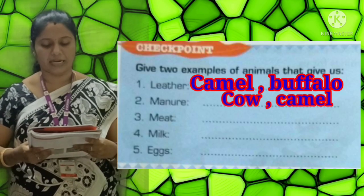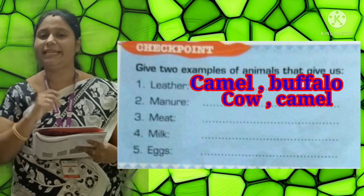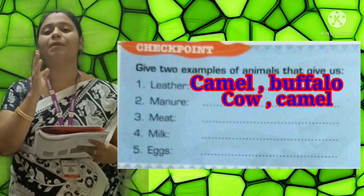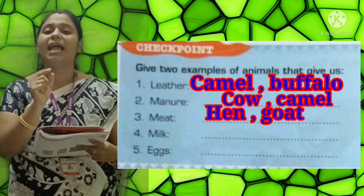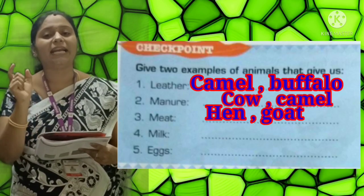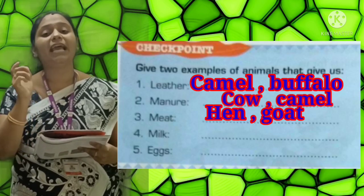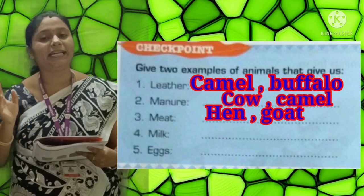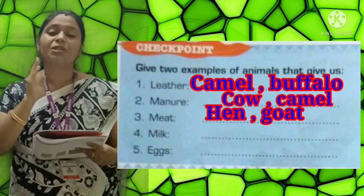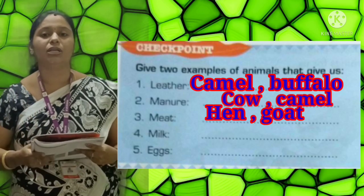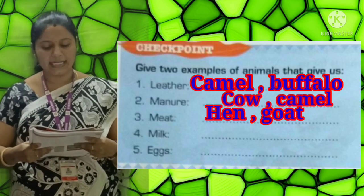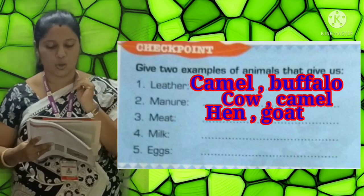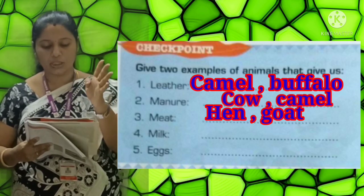Third: Meat. We get meat from Hen (H-E-N) and Goat (G-O-A-T).